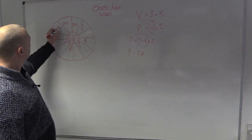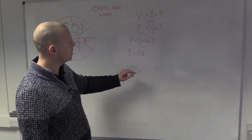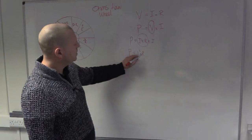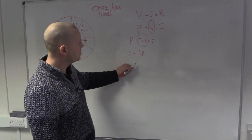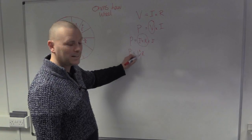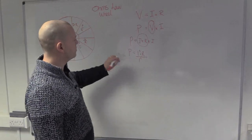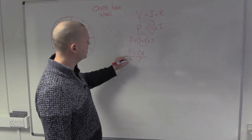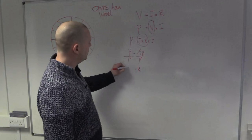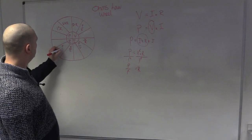So we can put P = I²R in now. We can also transpose this to get equations for current and resistance. First, let's get one for resistance, which means getting rid of I². Since it's being multiplied, we divide both sides by I² and cancel it. That gives us resistance equals P over I squared, R = P/I².